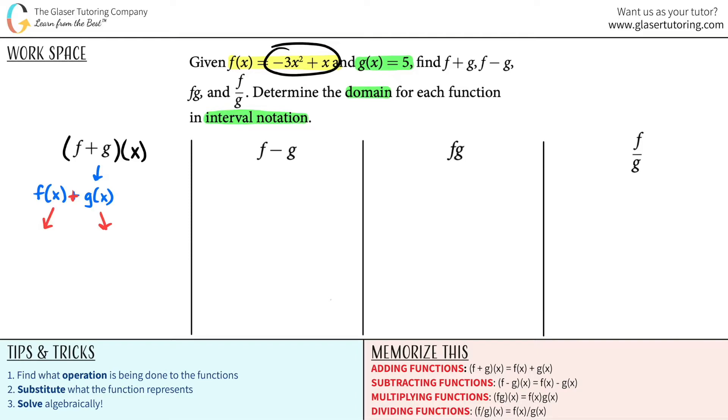f of x was negative 3x squared plus x, so negative 3x squared plus x, and now I'm going to pull in plus the other one, g of x, which was just 5. Now when you're doing your domain, always look at the one that you initially wrote. Now you just try to simplify, but there's nothing that you could simplify here because there's no like terms. So your f plus g of x is negative 3x squared plus x plus 5. That's your answer, the new function when you add the f and g functions together.